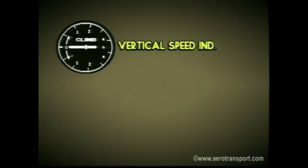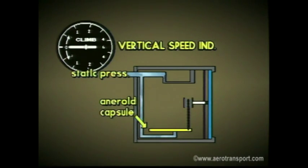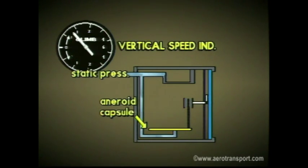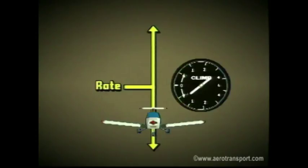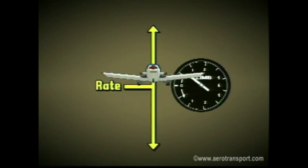The vertical speed indicator shows the rate of climb or descent. It uses an aneroid capsule connected to the static pressure line to measure change in barometric pressure. As the airplane descends, the pressure in the static line increases; the opposite is true for gain in altitude. During level flight, the pointer remains at zero. The instrument is calibrated in feet per minute. Keep in mind, the vertical speed indicator measures the rate of climb or descent, not the altitude of the plane.